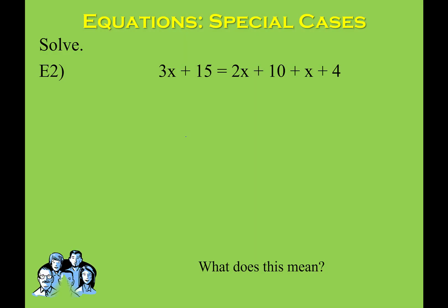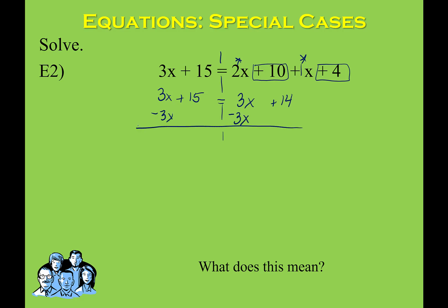Here's another example. On the left side I have 3x plus 15. On the right side I do have like terms: 10 and 4 give me 14, and 2x plus 1x gives me 3x. Then we'll subtract 3x from both sides to get the x's together. Just like in the last problem, 3x minus 3x is 0 on both sides. So I end up with 15 equals 14.